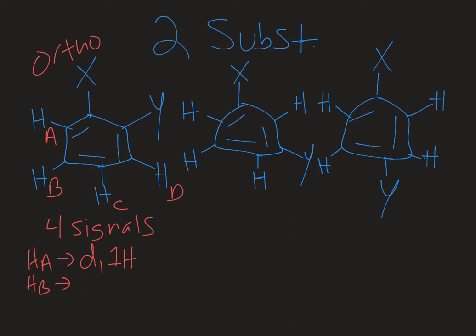HB has two neighbors, HA and HC, so it'd be a triplet, and that would be the abbreviation T, and it would have an integration of one. HC would also be a triplet. It has two neighbors, HB and HD, so that's a triplet with an integration of one. And then HD would be a doublet with an integration of one. So the ortho substituted compound with two substituents would have four total signals, two doublets, two triplets, and they would each be worth one hydrogen.